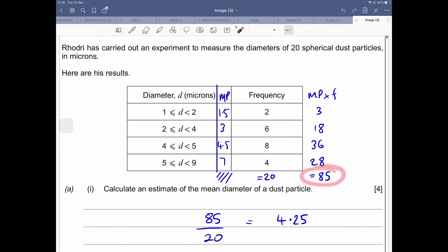But you do go and add up the midpoint times frequency column, so that tells you how many microns there would be in total, divided by the total number of different dust particles. I can then see the calculation has been done, and then I've got the answer 4.25. I want to see what calculation has led to that answer.